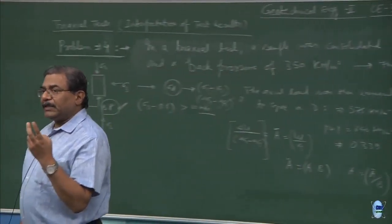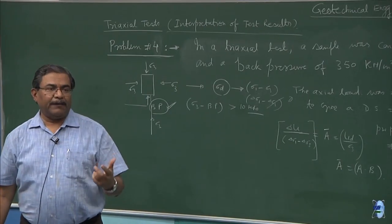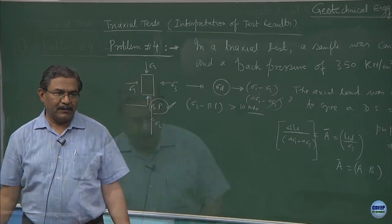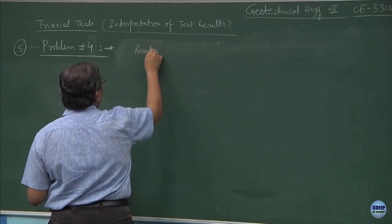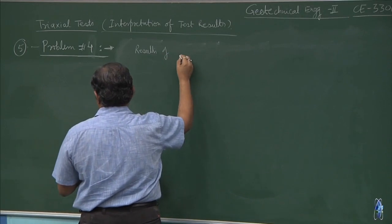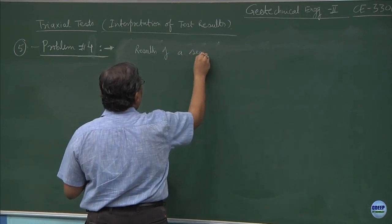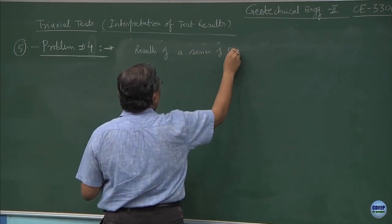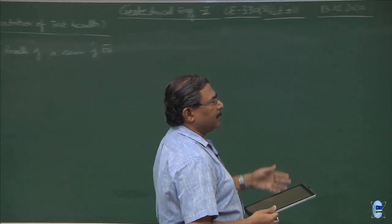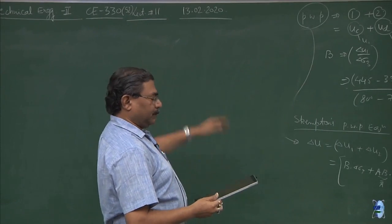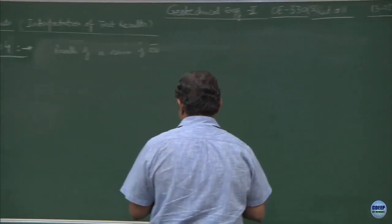We use two parameters A and B and A prime to characterize the soil. The results on the same material, by doing all these analysis, what we have established is the sample is saturated only by applying back pressure. We have made sure.